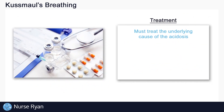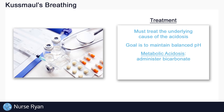To treat Kussmaul's breathing, we have to treat the underlying cause of the acidosis. If we can maintain a balanced pH, there would be no need for the body to continue Kussmaul's breathing. For example, in metabolic acidosis, administering bicarbonate may be required to balance out the pH. For diabetic ketoacidosis, administering insulin may be required to allow glucose to be used for energy instead of fats, decreasing the amount of acidic ketones being produced. And these are just some of the many possible cases.